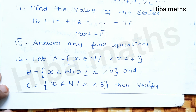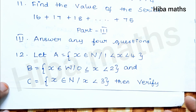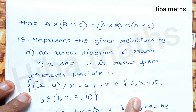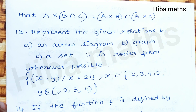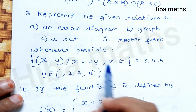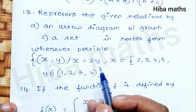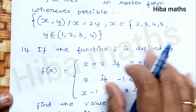Part 3 is 5 marks. Verify that A ∪ (B ∩ C) = (A ∪ B) ∩ (A ∪ C) — prove that LHS = RHS. Also, represent the given relation by an arrow diagram, graph, a set, and roster form. Wherever possible, we have to identify the function.